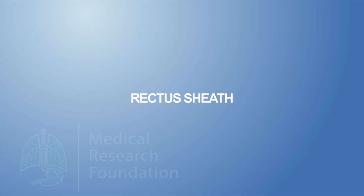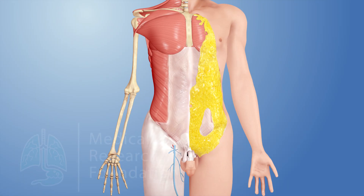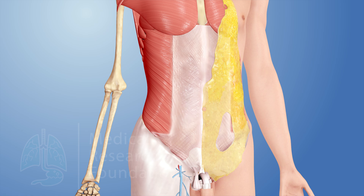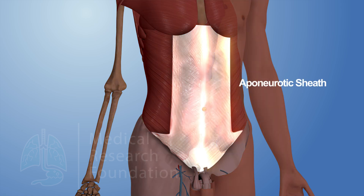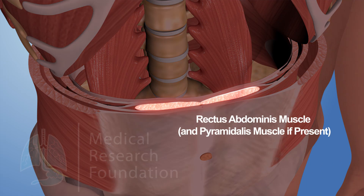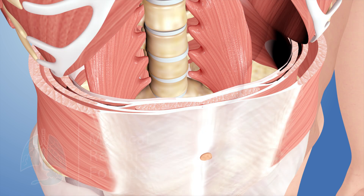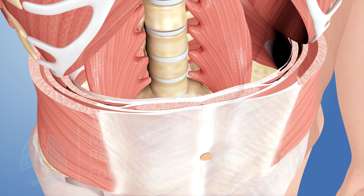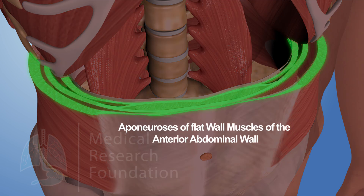The rectus sheath is an aponeurotic sheath enclosing the rectus abdominis muscle and pyramidalis muscle, if present. On either side of the linea alba, it is derived from the aponeurosis of flat muscles of the anterior abdominal wall.